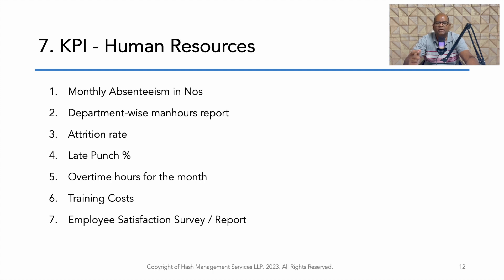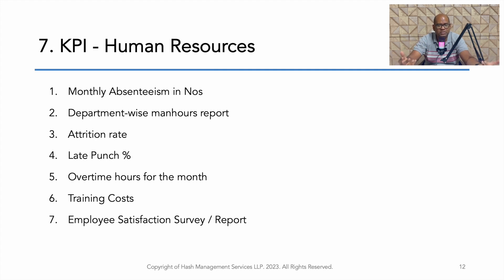In the HR department of a manufacturing company, key performance indicators can include monthly absenteeism rate, monthly attrition rate, department-wise manpower utilization rate, number of people doing late punches, department or section-wise overtime hours, training costs, and employee satisfaction surveys. These are the various KPIs for different departments in a typical manufacturing company.